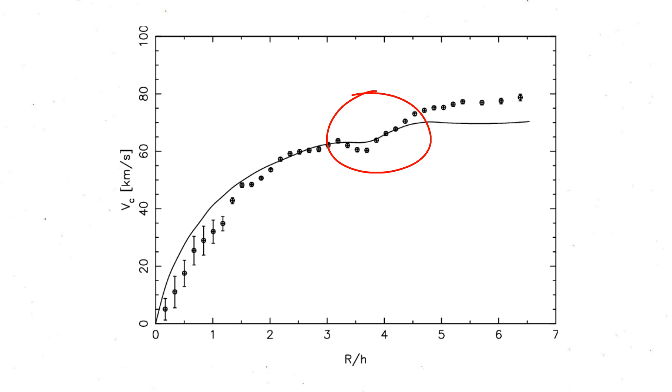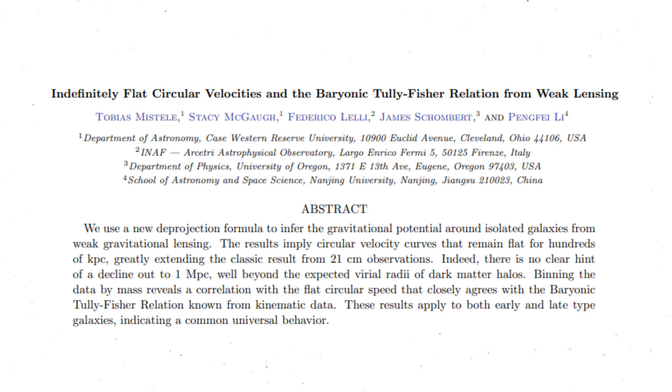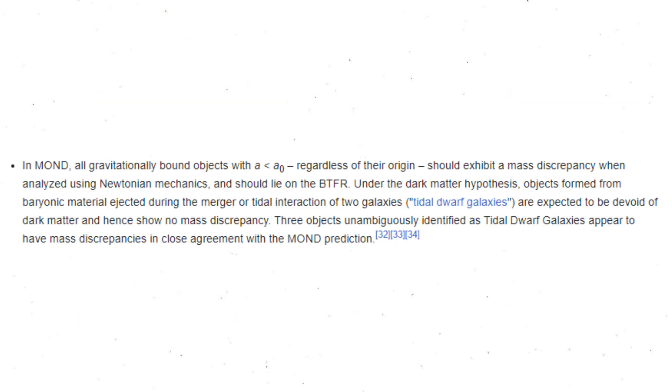Although the Tully-Fisher relationship was known for certain types of galaxies before Milgrom worked out MOND, MOND predicted this relationship for all galaxy types after its formulation. There are many more indications that support MOND, such as observed flat rotation curves extending beyond the supposed dark matter halo, tidal dwarf galaxies exhibiting dark matter effects that shouldn't exist according to physical dark matter models.